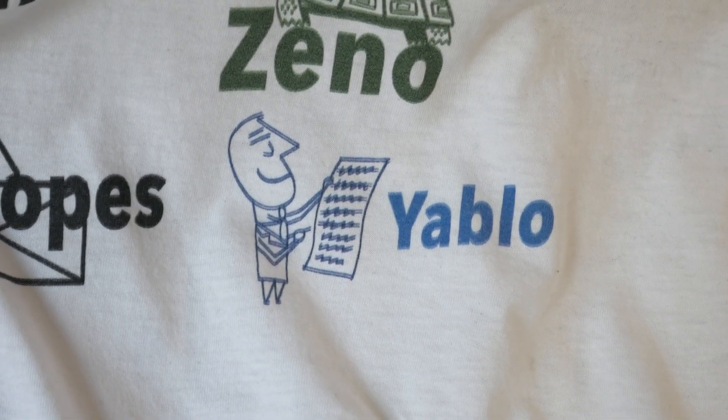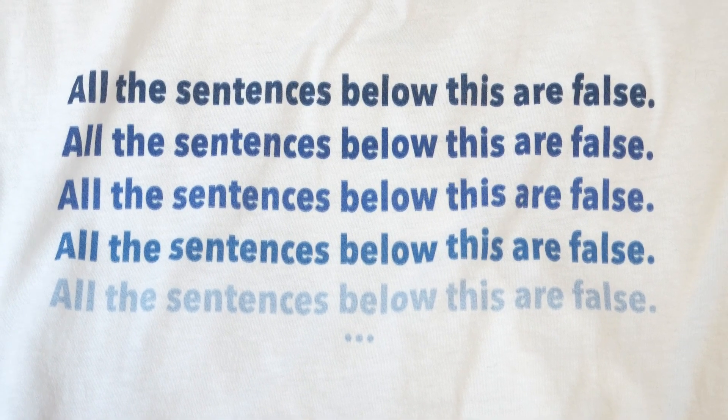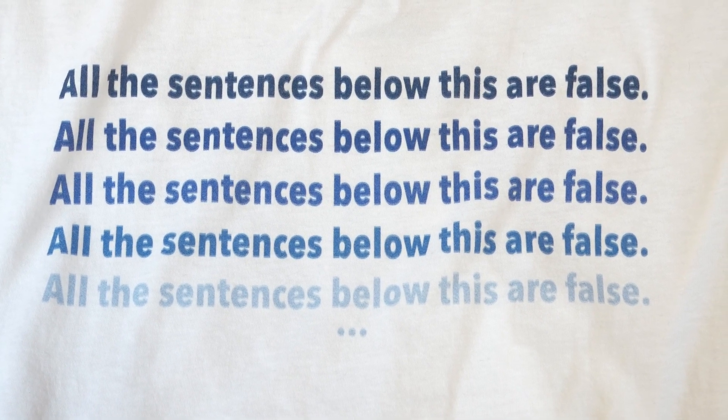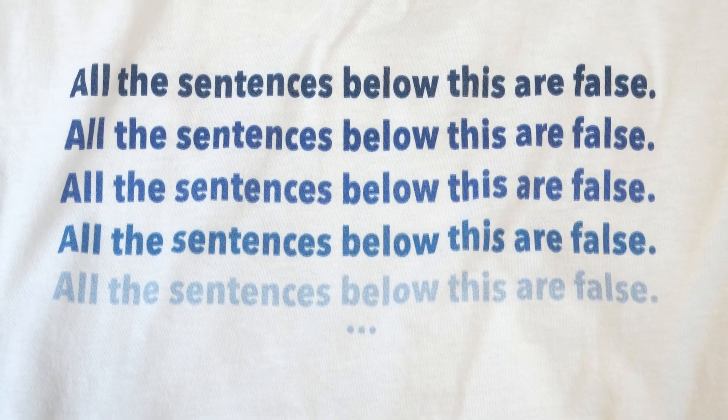That's where Yablo comes in with Yablo's paradox. It says 'all the sentences below this are false,' and then the next line says the same thing, continuing down indefinitely. Suppose the first sentence is true — that means the second sentence is false, implying not all sentences below it are false, which is a contradiction. Yablo showed this paradox is not fundamentally about recursion because none of these statements refer to themselves; they only refer to the statements beneath them.